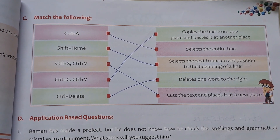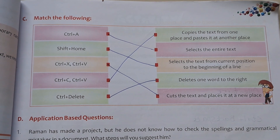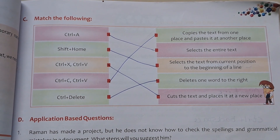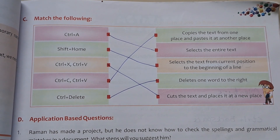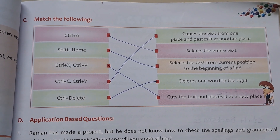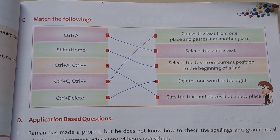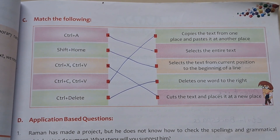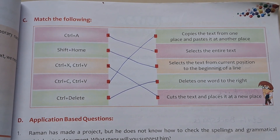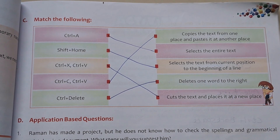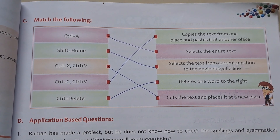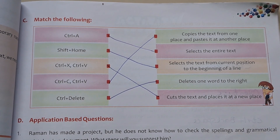Match the following. Ctrl plus A — Select the entire text. Shift plus Home — Select the text from the current position to the beginning of a line. Ctrl X, Ctrl V — Cut the text and place it at a new location.